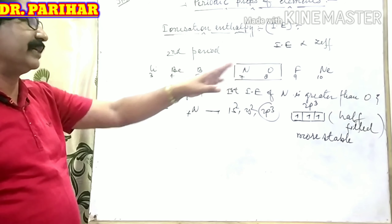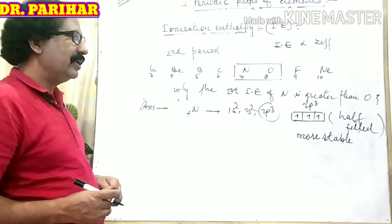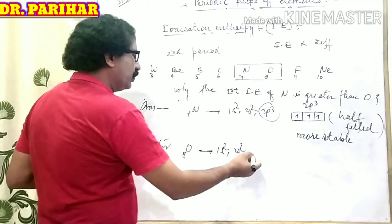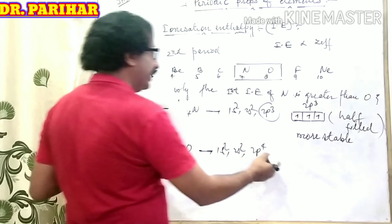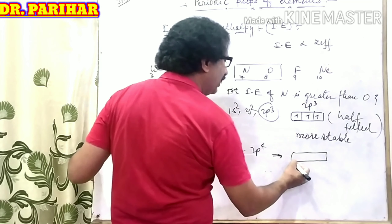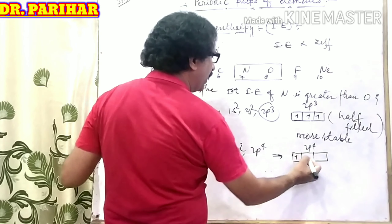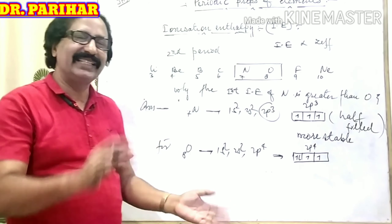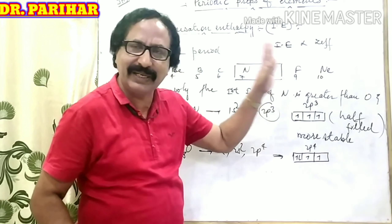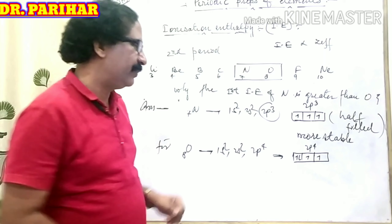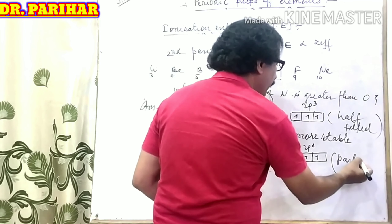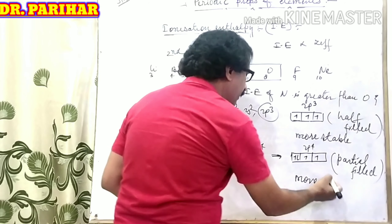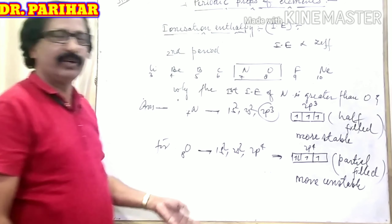Now for oxygen, atomic number 8, its electronic configuration is: 1s2, 2s2, 2p4. Its outermost p sub-shell has four electrons — one, two, three, four. Through its outermost sub-shell you can notice that it is neither full-filled nor half-filled. It is counted as partial-filled. The partial-filled state is said to be more unstable.